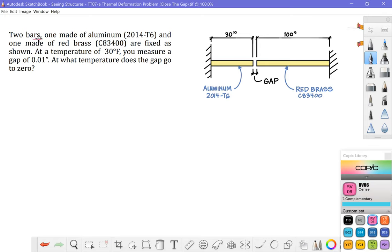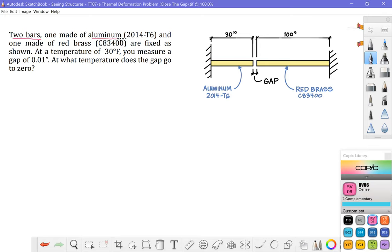We've got two bars. One is made of aluminum and the other is made of brass. These bars are 30 inches long and 100 inches long respectively and there's a small gap between them. This drawing is not to scale but the gap is given as 0.01 inches.